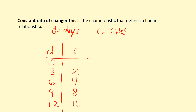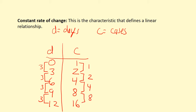Let's see if this meets the criteria for a linear relationship. We go up a fixed amount of three days and we go up one case, then another three days and we go up two cases, then another three days and we go up four cases. Even though each interval on the left is the same, the amount we're increasing on the right is not constant — it changes by a different amount every time.